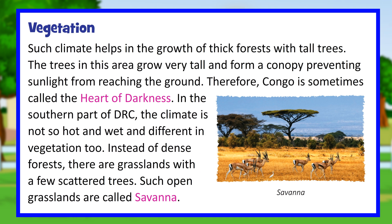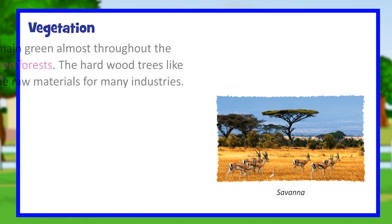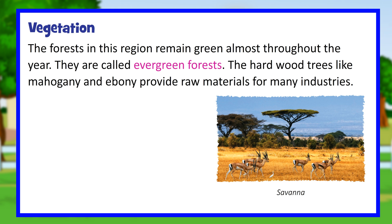Such climate helps in the growth of thick forests with tall trees. The trees in this area grow very tall and form a canopy preventing sunlight from reaching the ground. Therefore, Congo is sometimes called the heart of darkness. In the southern parts, the climate is not so hot and wet, and the vegetation is different too. Instead of dense forests, there are grasslands with a few scattered trees, called savannah. The forests in this region remain green almost throughout the year and are called evergreen forests. The hardwood trees like mahogany and ebony provide raw materials for many industries.